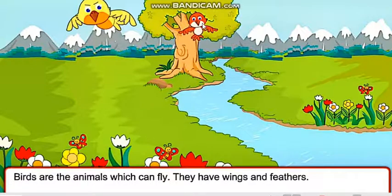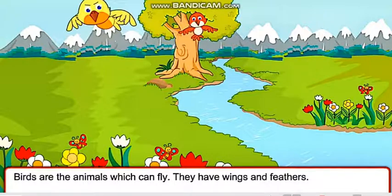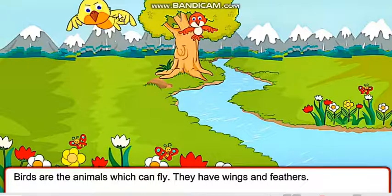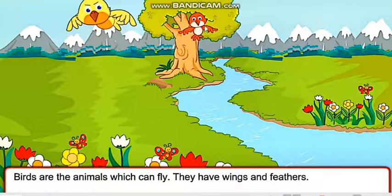Students, you can see in this picture, these are the birds and they can fly. They have wings and feathers. Unki wings aur feathers hotay hain. Wings help them to fly. Wings unki help kertay hain uadne ke liye. And feathers cover their body. Aur feathers unki body cover hoi hotay hain.